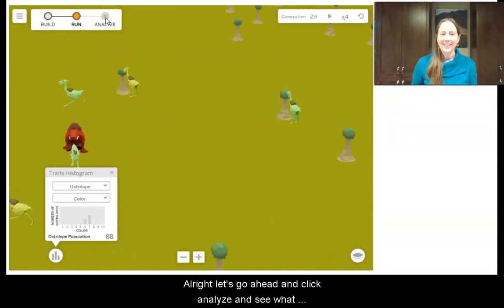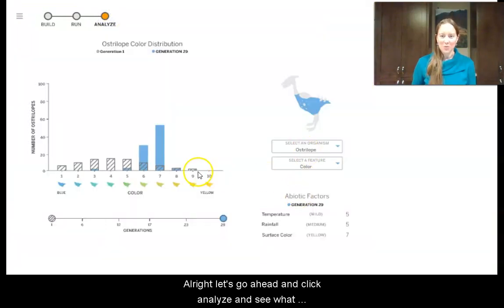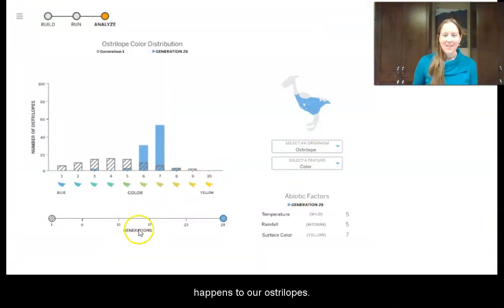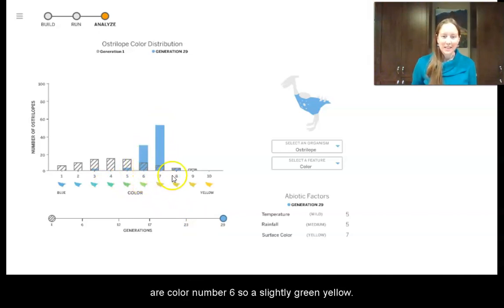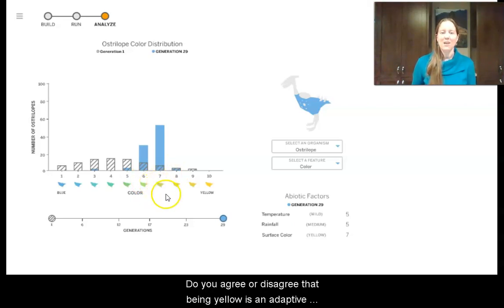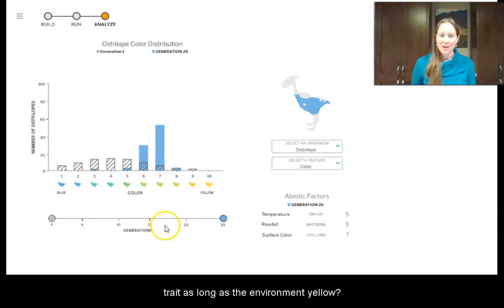Let's go ahead and click analyze and see what happens to our ostrilopes. After about 30 generations, you can see that most of our ostrilopes are now color number seven, and many of them are color number six, so a slightly green. So does this match your prediction? Do you agree or disagree that being yellow is an adaptive trait as long as the environment is yellow? What does this evidence tell you?